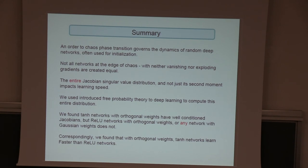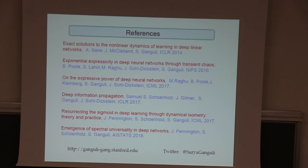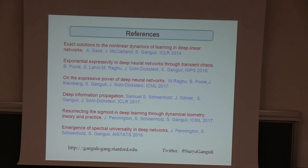To summarize: not all networks at the edge of the order-chaos transition are the same. All have neither vanishing nor exploding gradients, but some are better in terms of learning speed. The extra information needed is the entire distribution of Jacobian singular values, not just the mean squared value. We used free probability theory to compute this distribution as a function of the nonlinearity and weight initialization, and used these analytic calculations to design networks with dynamically isometric initializations that actually perform better.